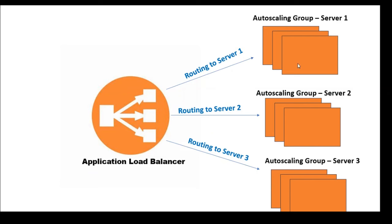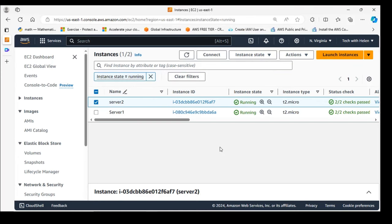Auto Scaling Group is a service in AWS that automatically adjusts the number of Amazon EC2 instances in a group, maintaining application availability and allowing you to scale your infrastructure based on demand or a defined schedule. Imagine you run a popular e-commerce website — during normal weekdays traffic is moderate, but every Friday evening you host a flash sale causing traffic to dramatically surge. Without auto scaling, you'd need to manually provision additional servers ahead of the flash sale and then scale down afterward.